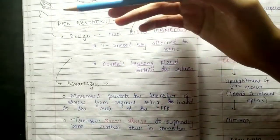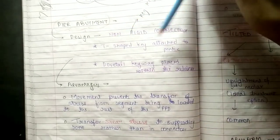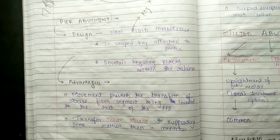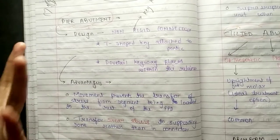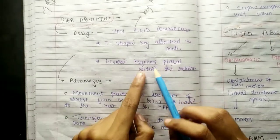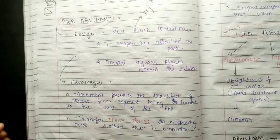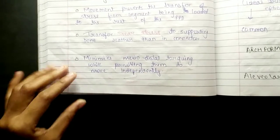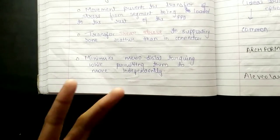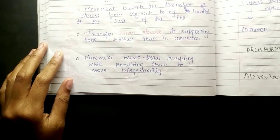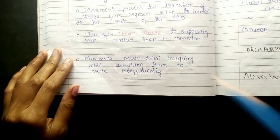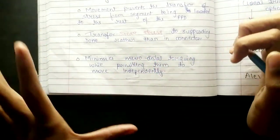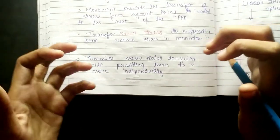If you don't know, in the first video on types of abutment you can see the key of the abutment. The T-shaped key is attached to the pontic, and the dovetail keyway is placed within the retainer. If we look at the fire abutment, tilted abutment and cantilever abutment are important, which is why we are learning about this management. The advantage is that movement prevents the transfer of stress from the segment being loaded to the rest of the FPD, and it transfers shear stress to supporting bone rather than to the connector.